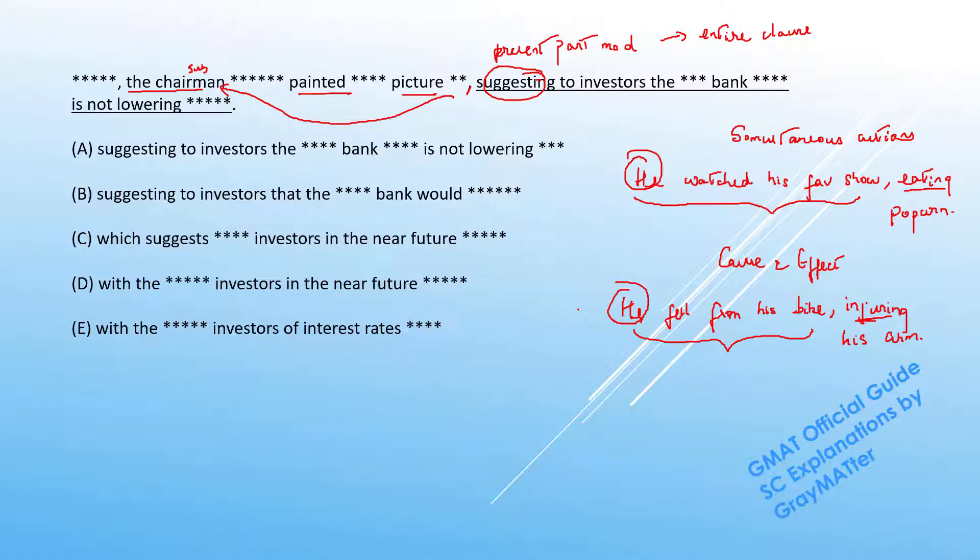So both these meanings can work and if we go by that we can understand that the chairman painted this picture of the economy suggesting to investors. So simultaneously when he painted the picture of the economy he suggested this.